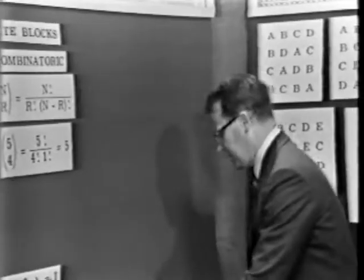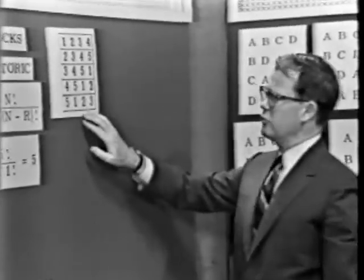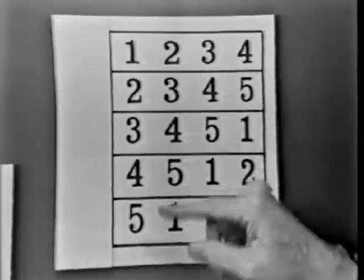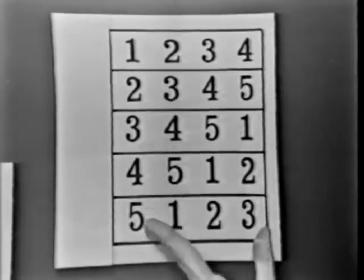Let me show you the corresponding experimental design. Here's a balanced incomplete block design in which there are five treatments: 1, 2, 3, 4, and 5. The numbers indicate the five treatments. But I can only jam four within a block.